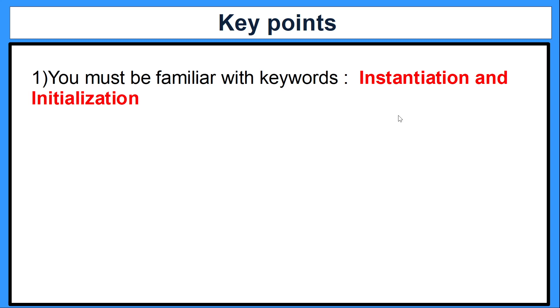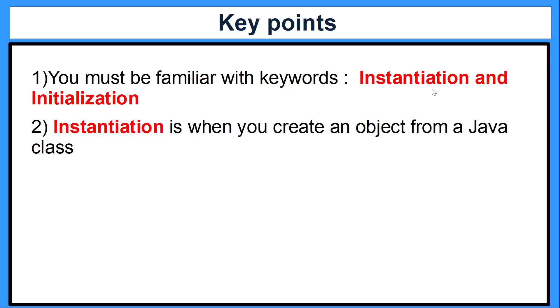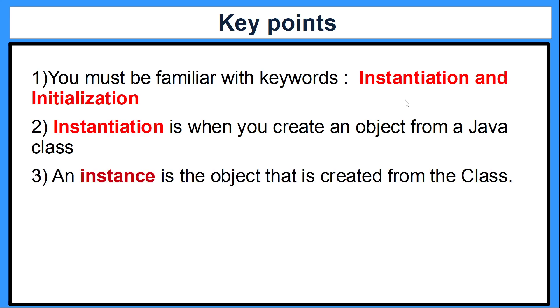So initialization is when you create that class, and instantiation is when you create an object or an instance of that class. These are the two words that we need to know. It's very important that instantiation is when you create an object from that Java class, and we call that object an instance.